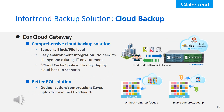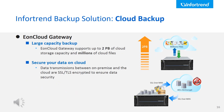InfoTrain's EonStore GS unified storage plus EonCloud feature is the solution for these problems. It supports both block and file-level protocols, meaning there is no need to change the existing IT environment — simply add the EonStore GS, connect it to the cloud, and deploy it. EonCloud supports different cloud cache and backup policies for a flexible backup plan, and also supports deduplication and compression to save bandwidth when uploading or downloading data. EonCloud supports a large capacity backup solution with a maximum cloud storage capacity of 2 petabytes and millions of cloud files, combined with SSL/TLS encryption to ensure secure data transmission between on-premise and the cloud provider.